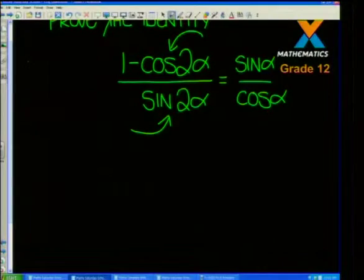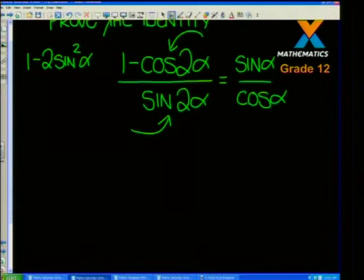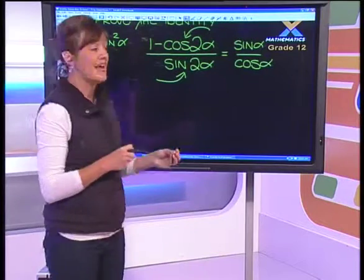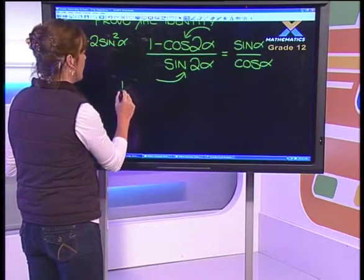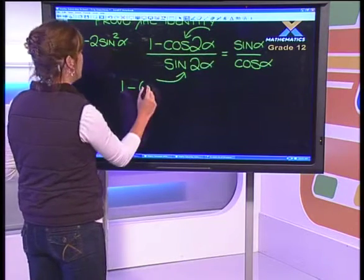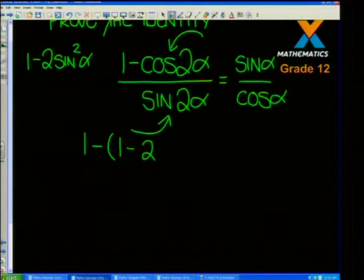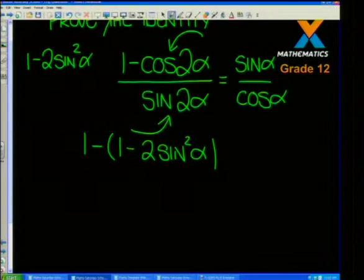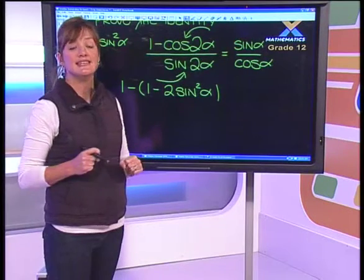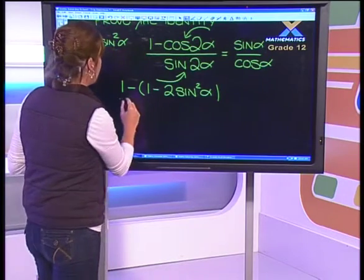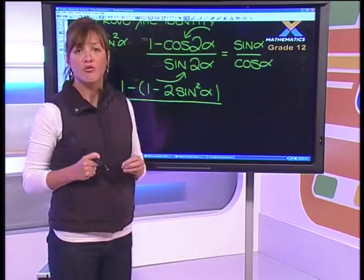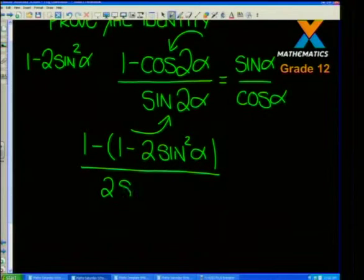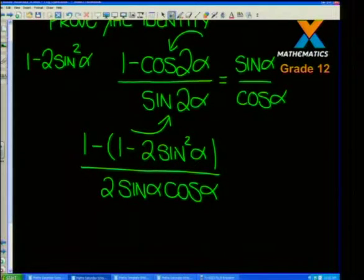The identity that just has sine in it is: cos2α = 1 minus 2sin²α. So instead of cos2α, I'm going to substitute 1 minus 2sin²α. For sine double angle, we only have one option: sin2α = 2sinα·cosα.